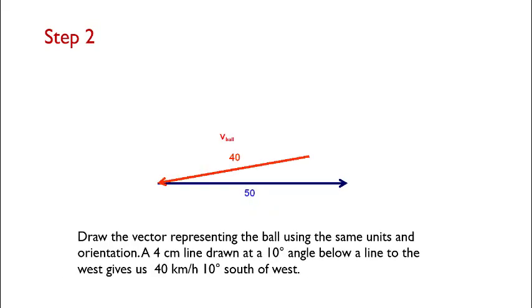Next, let's add the velocity of the ball. I'm representing it here by the red arrow. This is drawn using a protractor at 10 degrees below a line that goes to the west, and that gives us a four centimeter line that is 40 kilometers per hour 10 degrees south of west.